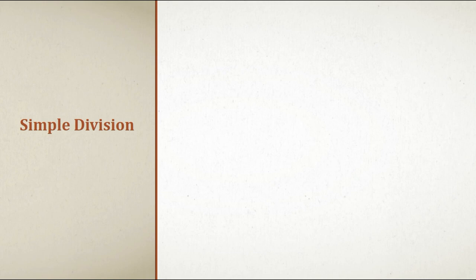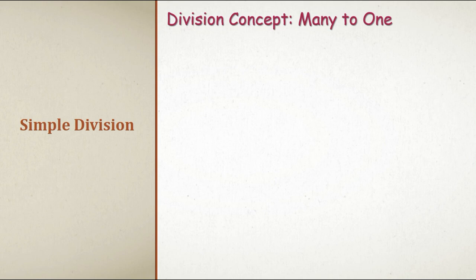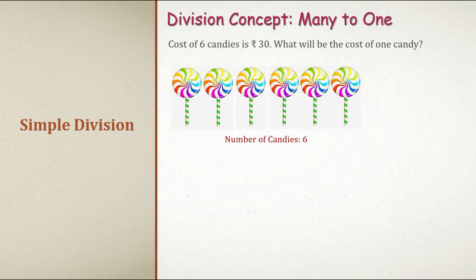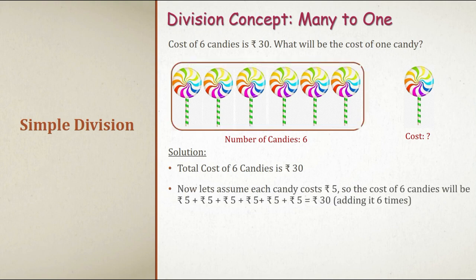For five bottles, we will have to add two liter plus two liter plus two plus two plus two, five times, which will give us ten liters. Or we simply multiply the quantity of one bottle with the total number of bottles. Quantity is two liters multiplied by five which gives us ten liters.